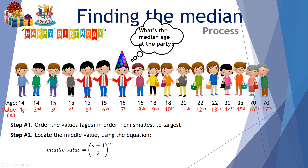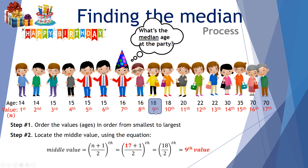We start at the first person with an age of 14 and go right up to the eldest. There are 17 ages, so the equation is (17 + 1) / 2, which gives 18 / 2, an answer of the 9th value — often referred to as the ninth score. You can see to the left of this median value we have eight scores, and to the right we have eight scores. This is indeed the middle value.